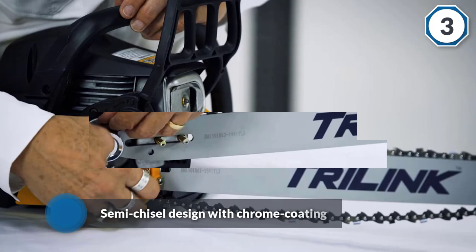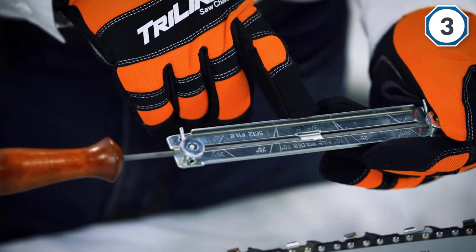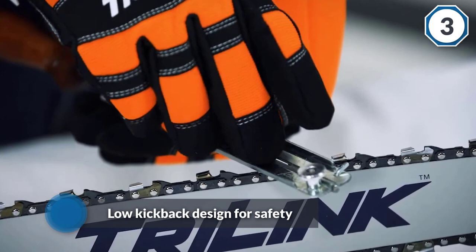The chain's teeth have a semi-chisel design with chrome coating. An added layer of chrome ensures the product's durability. Also, it's suitable for all top chainsaw brands: Echo, Craftsman, Husqvarna and more.